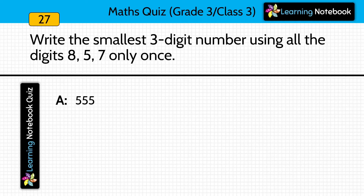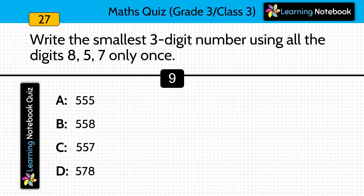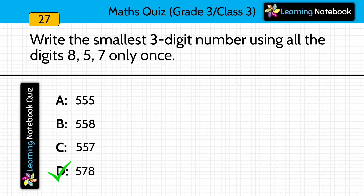Write the smallest 3-digit number using all the digits 8, 5, 7 only once. Answer is 578 — this is the smallest 3-digit number which can be formed using digits 8, 5, 7 only once.